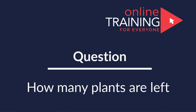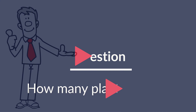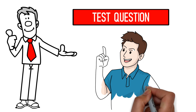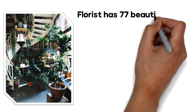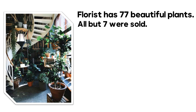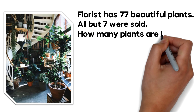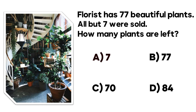Hopefully you've nailed this question and now know how to answer similar problems on the test. I am very excited to present you with a simple but very tricky question which tests your math skills as well as attention to details. A florist has 77 beautiful plants. All but 7 were sold. How many plants are left? You have four choices: A — 7, B — 77, C — 70, and D — 84.